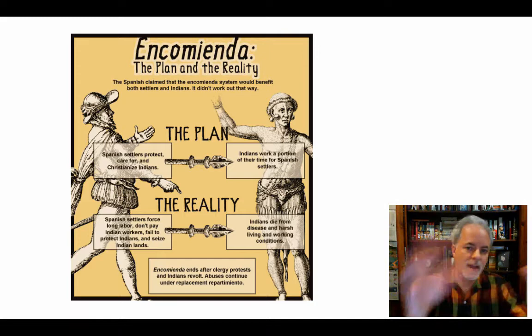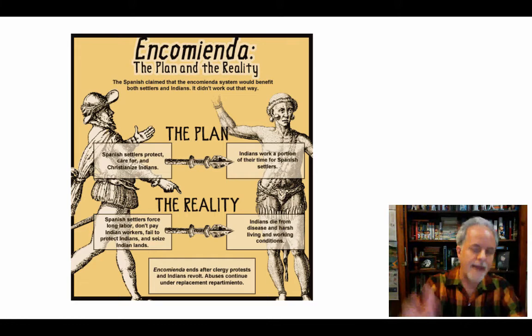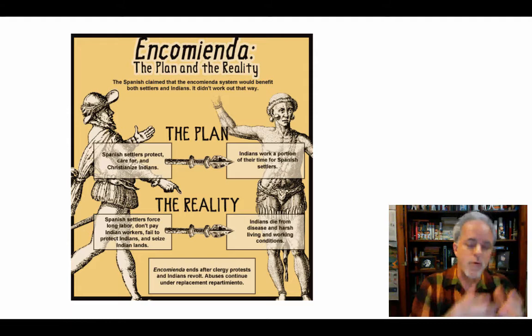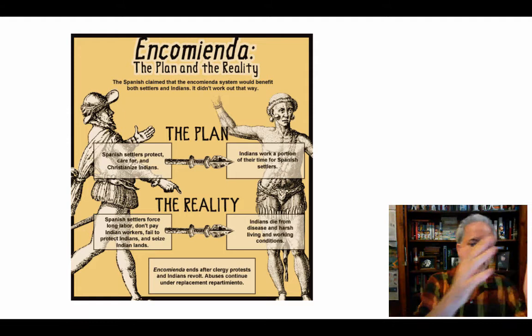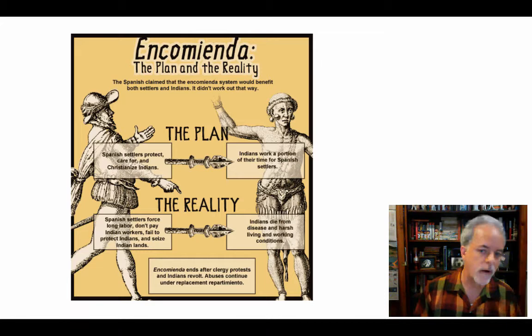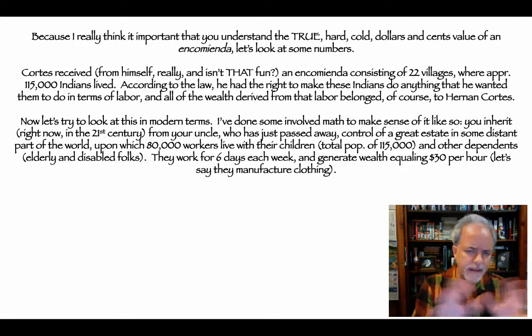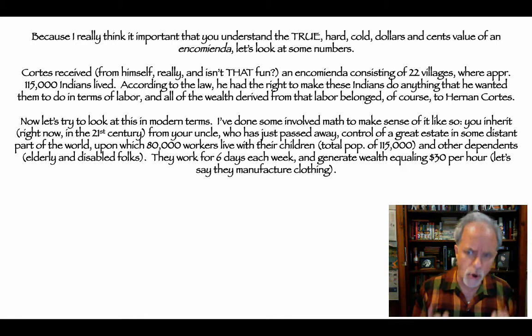Here's an interesting graphic explaining the plan versus the reality. This is what encomienda was supposed to be in terms of how the crown legitimized it. Columbus had to send documents to Spain asking the crown if they could proceed this way. You can pause and look this over.